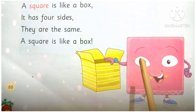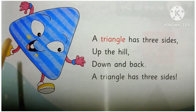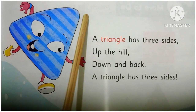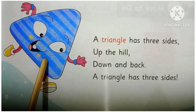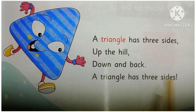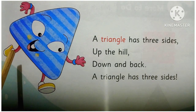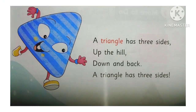A square is like a box. A triangle has three sides. Up the heel, down and back. A triangle has three sides.